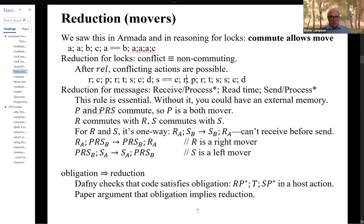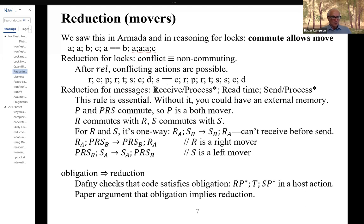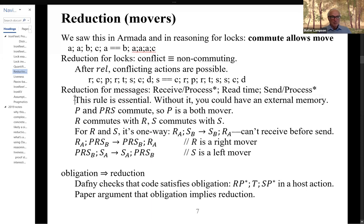It should be intuitively clear that some rule like this one, which limits the way in which you communicate from within one atomic host action, is going to be essential. Because if you don't have some constraint, then you could have another host acting as a memory and do read and write actions on that other host, and simulate ordinary concurrent execution — and we know that you don't have atomicity under those circumstances. Some rule like this is going to be absolutely essential.